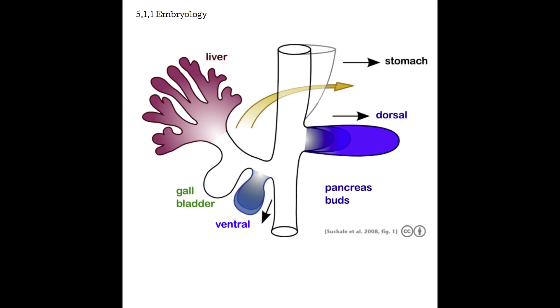The pancreas starts to form at about week 4 and starts functioning at week 10. We all start as tubes, and so the pancreas is going to arise from two buds off that duodenal portion of the embryonic tube.